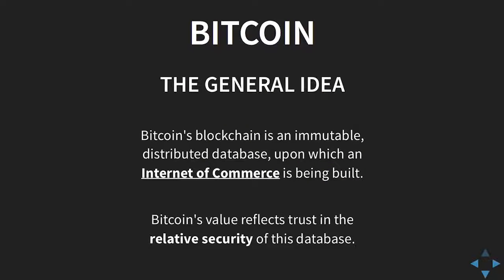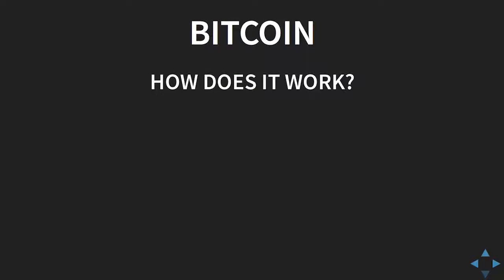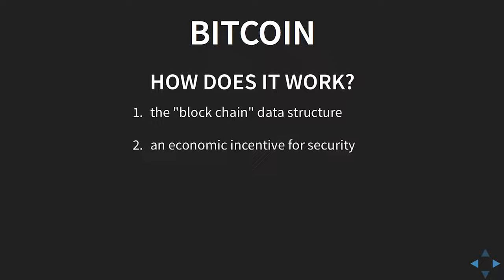The value of Bitcoin the currency reflects our trust in this database. The currency price on the markets reflects how trustworthy that asset is. And the reason this works is really cool — there are three parts to it: the blockchain data structure, an economic incentive for its security, and a non-forgeable proof of work.